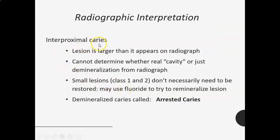Interproximal caries lesions are always larger than they appear on a radiograph. If something looks like it's just barely into the dentin, it's probably going deeper than it appears, or if something looks like it's just not quite halfway into the enamel, it probably is halfway. You cannot determine whether there's a real cavity or just demineralization from a radiograph — an area might look like a Class 1 or Class 2 but could just be demineralized.